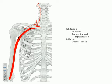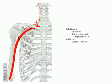The first branch to identify is the superior thoracic artery. This comes off the first segment, very proximally, and as the name implies, it supplies blood to the cutaneous structures within the superior thoracic region.